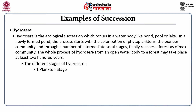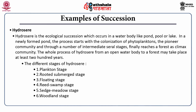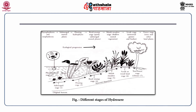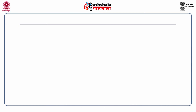The different stages of hydrosere are: plankton stage, rooted submerged stage, floating stage, reed swamp stage, sedge meadow stage, woodland stage, and finally forest stage. This figure represents the different stages of hydrosere. On the left-hand side the first stage is shown — phytoplanktons — and on the right-hand side the final stage is the forest stage with trees and other land plants.